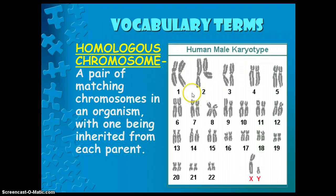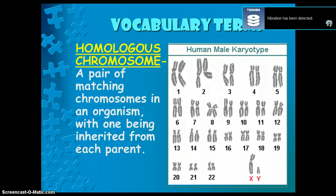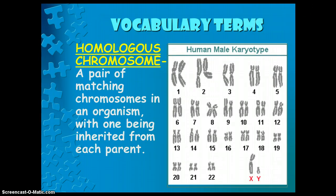These chromosomes carry on them the exact same genes — and by the exact same genes, I mean the same type of gene. They might not be the exact same gene. For instance, your mom might pass down a gene for brown hair color while your dad might pass down a gene for blonde hair color, but they still carry the genes for hair color on them.